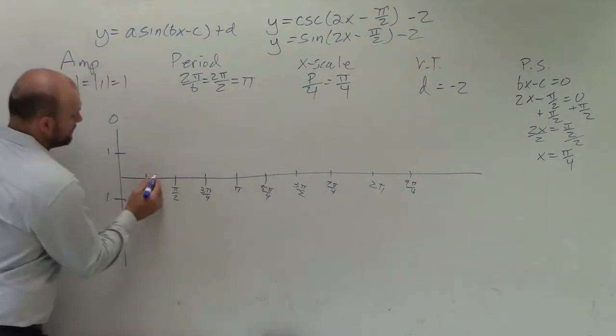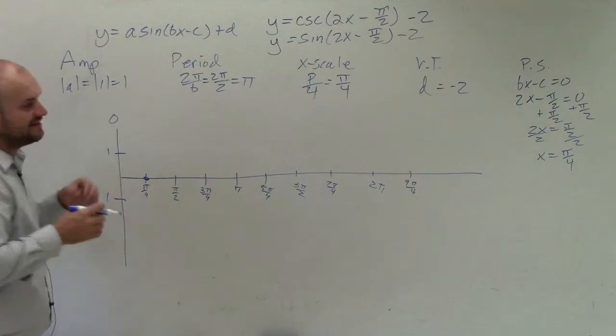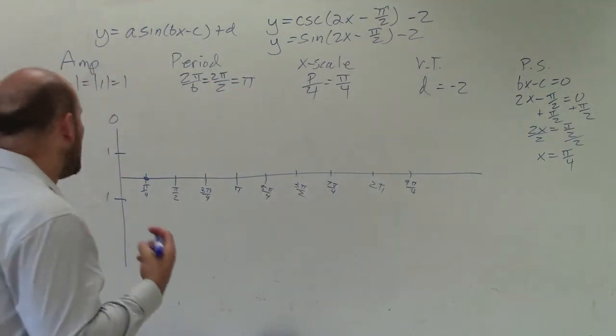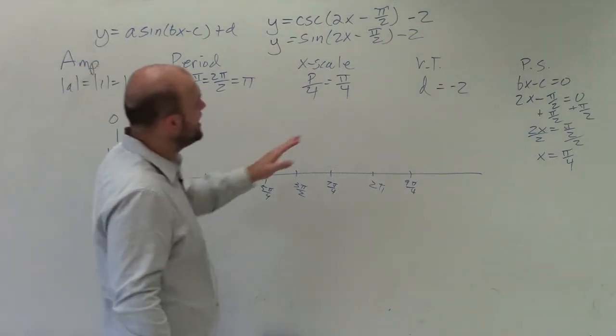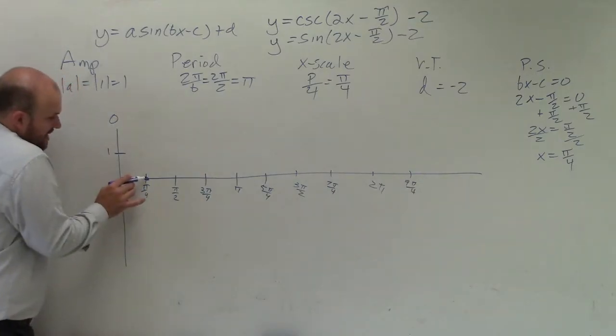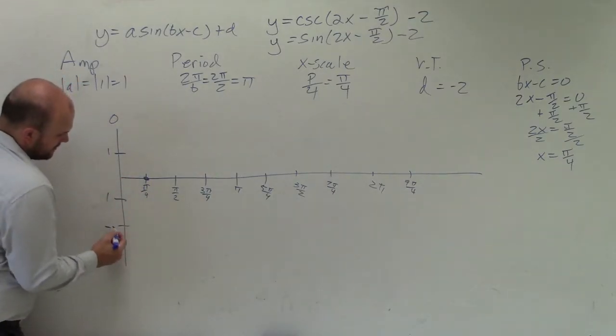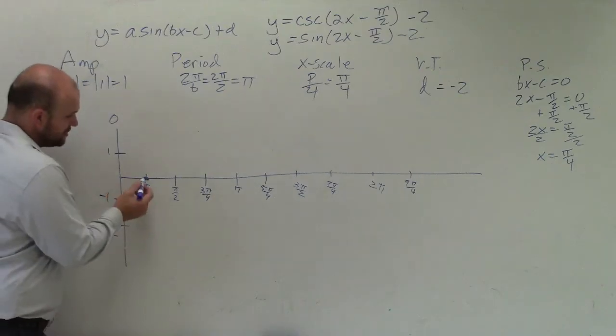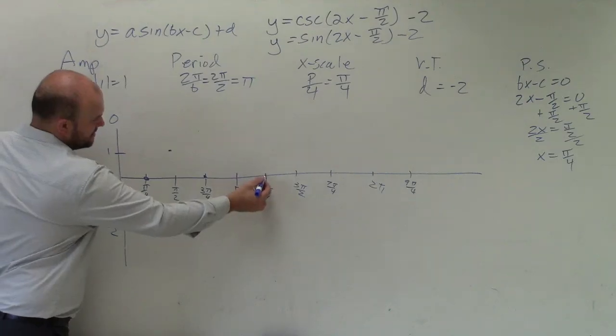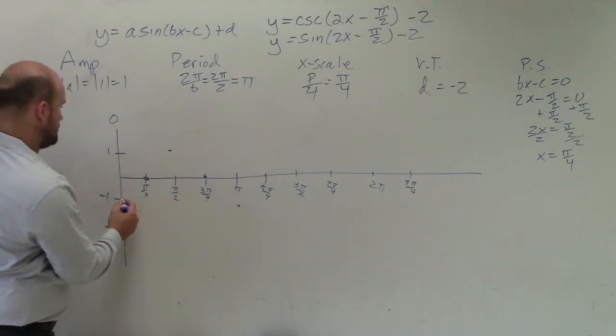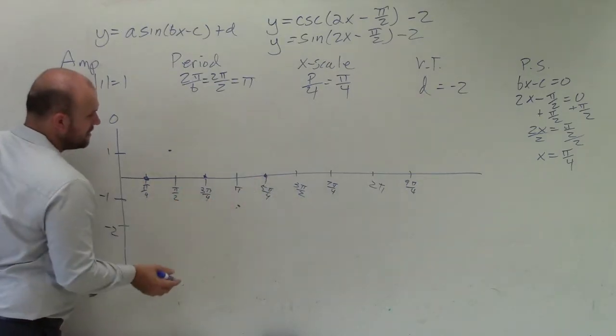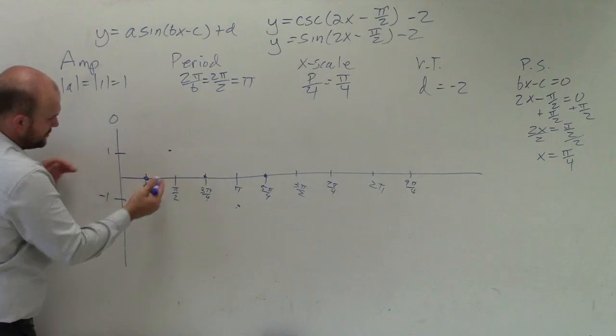When we look at the graph of sine, we know it starts at the axis and then goes up to its maximum. However, please note that we have a vertical translation of down two units. So instead of crossing here and going up to here and going down to here, we need to shift each one of these points down two units. So that's going to go up to there, there, there, down to negative 3.